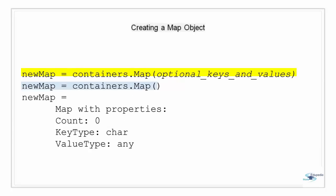Creating a map object: a map is an object of the map class and is defined within a MATLAB package called containers. Like other classes, we use a constructor function to create new instances. The syntax is highlighted in yellow, using the containers package when calling the constructor. When you call the map constructor with no input arguments, MATLAB constructs an empty map object. The properties of an empty map object are set to default values: count is zero, key type is character, and value type is any. After constructing the empty map object, we can use the keys and values methods to populate it.